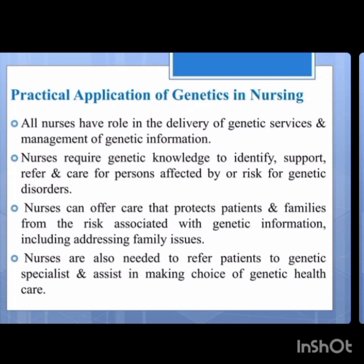For example, in the case of Down syndrome, if they go for nuchal translucency scanning at 13 weeks, they will check the nuchal length at the back of the child. By that, they can say the child is suffering from Down syndrome even when the child is in utero — at three months of in vitro life, the radiologist or gynecologist can say the child is suffering from particular risk factors. So they can go for abortion instead of stressfully carrying out the delivery.